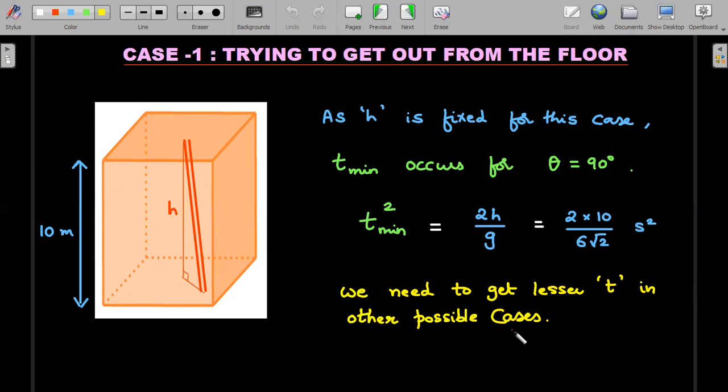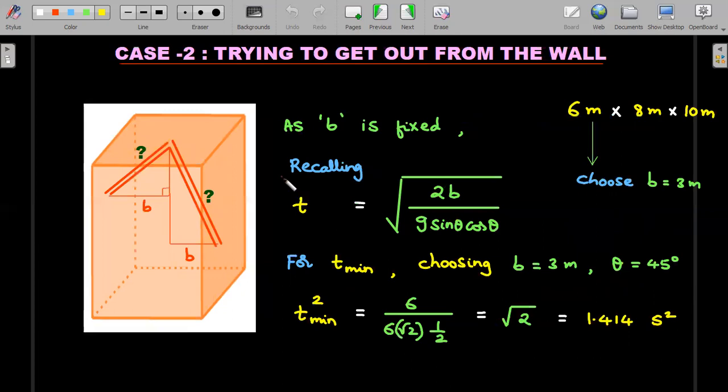We'll keep this one. This is not the minimum of all cases because you have to check for case 2 also. So we need to get lesser t in other possible cases in case we want to say that as the answer. So in case 2 we'll try to come out from the walls. Maybe take the tunnels like this, so let's move forward.